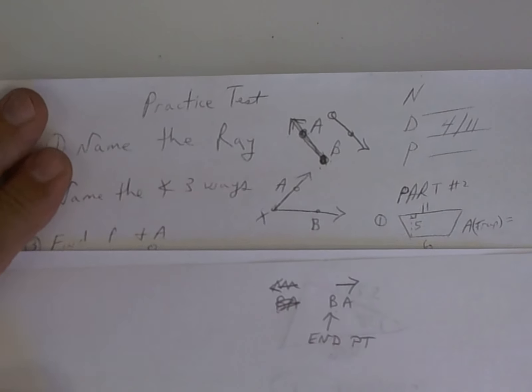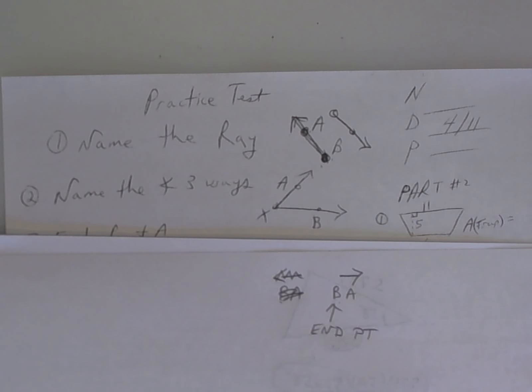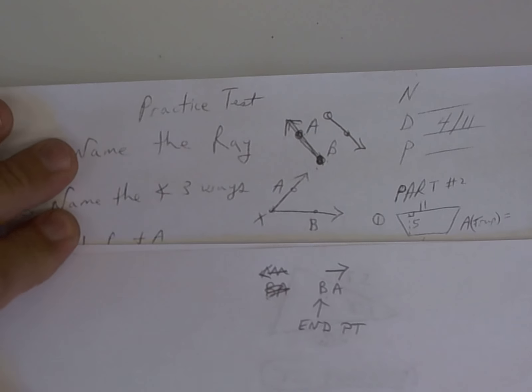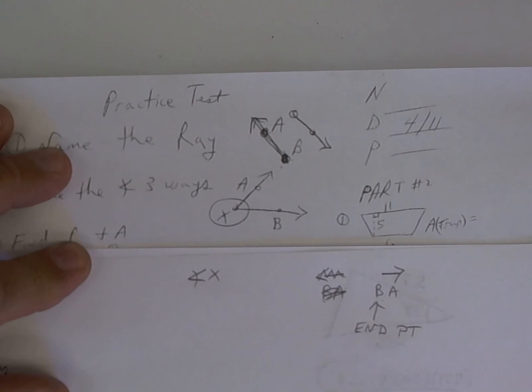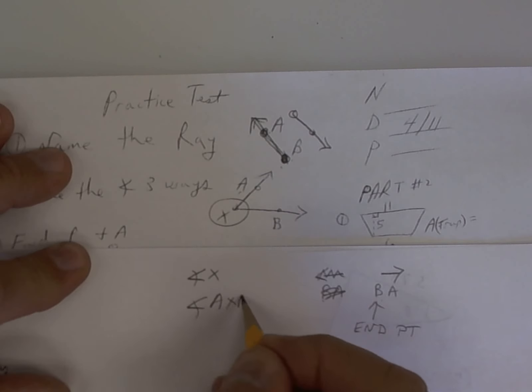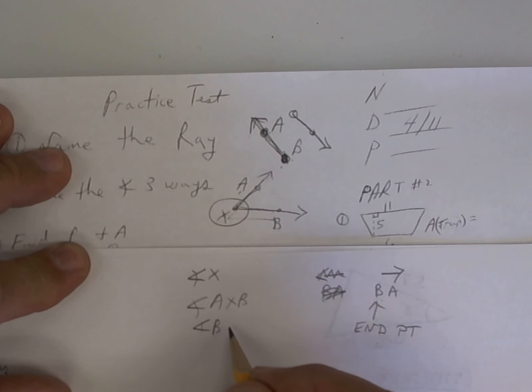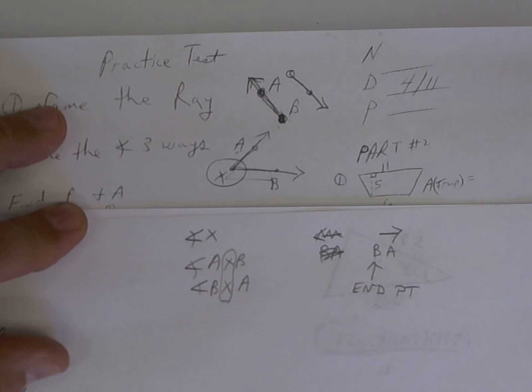Next. Name the angle three ways. All right, up here it says name it three ways. You could just say angle X from the vertex. That's one. Or you could say angle A-X-B. Go on this way. Or you could say angle B-X-A. But understand that the vertex is always in the middle. That's where it pivots.